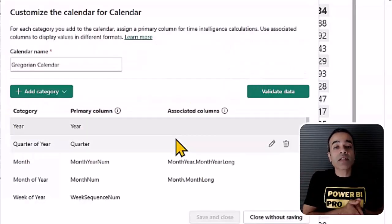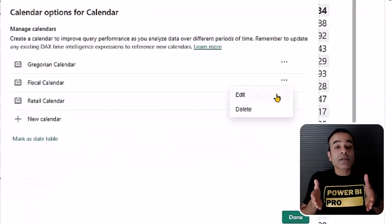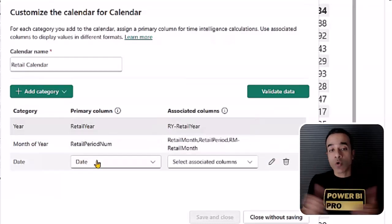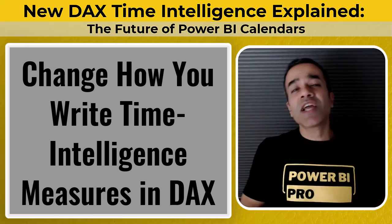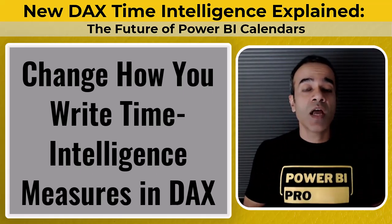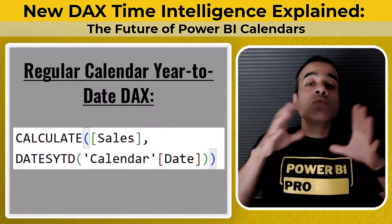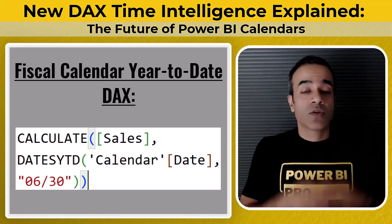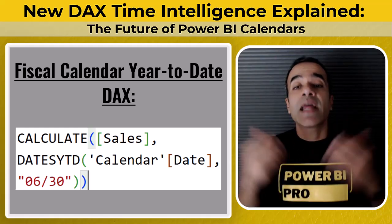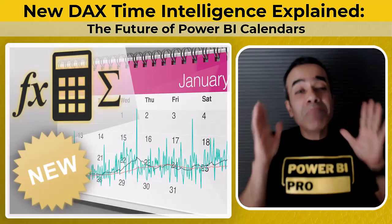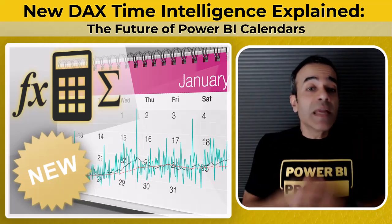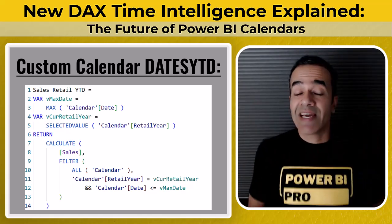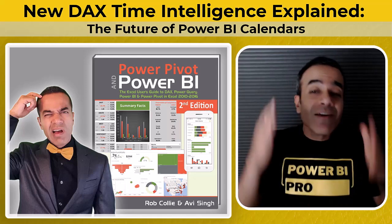For example, you can define your Gregorian calendar with year, month, and so on. You can define your fiscal calendar using fiscal year, fiscal quarter, and fiscal month columns. And you can define a custom retail calendar using its own columns. This could completely change how you write DAX time intelligence functions. Before, for regular calendars, you would write something like datesYTD(calendar[date]). For fiscal calendars, you could add an optional parameter to specify the end of the fiscal year — so datesYTD(calendar[date], "6/30"). But for custom calendars, things got messy. You needed complex DAX patterns, and I'll admit, even I had to look it up in my own book every time I needed to write one.